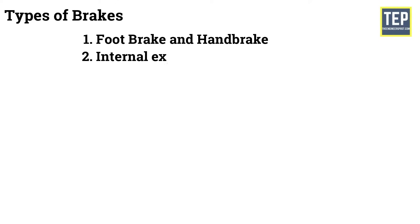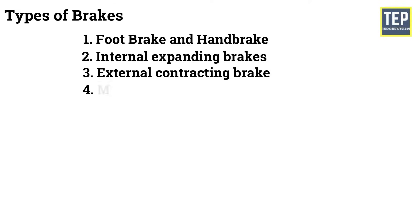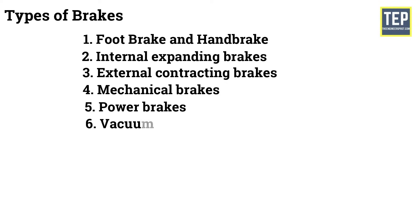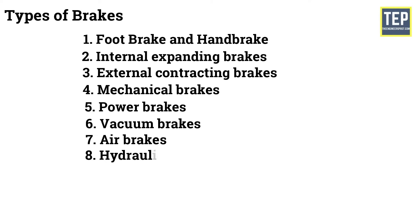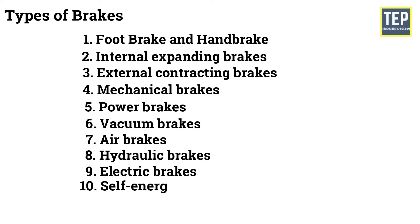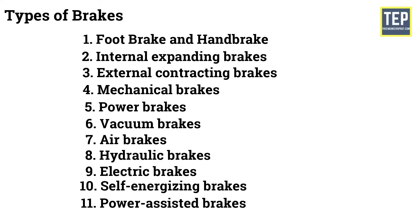Types of brakes. Following are the types of braking system used in automotive vehicles: foot brake and hand brake, internal expanding brakes, external contracting brakes, mechanical brakes, power brakes, vacuum brakes, air brakes, hydraulic brakes, electric brakes, self-energizing brakes, and power assisted brakes.